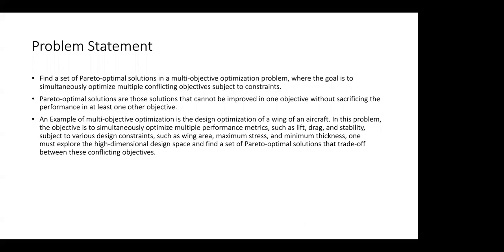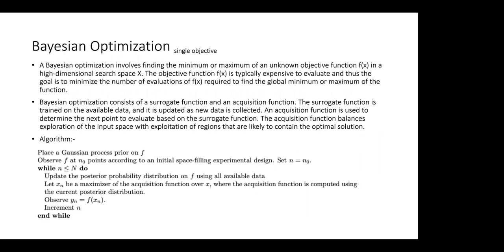This is the multi-objective optimization scenario. They are using Bayesian optimization to solve these problems. I'll start by talking about Bayesian optimization for a single objective problem — like in machine learning where we try to decrease the loss function with respect to different hyperparameters, or in a thermodynamic system where we minimize enthalpy.